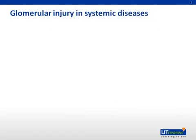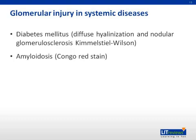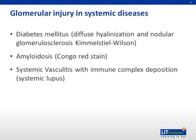There are more systemic diseases which can cause glomerular injury. Diabetes mellitus is common and characterized by diffuse hyalinization and nodular glomerulosclerosis. Renal amyloidosis occurs in patients with multiple myeloma or with chronic inflammatory disease; Congo red stain is diagnostic. Immune complex deposition in systemic vasculitis, like systemic lupus, can cause proliferative glomerulonephritis.